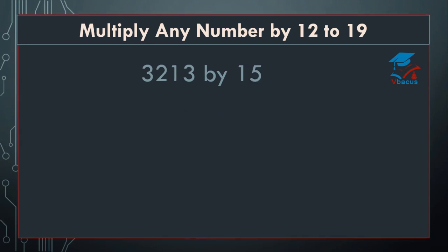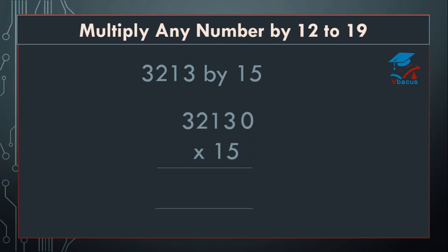Let us go to the next sum: multiply 3213 by 15. Here you have to multiply by 5 and insert a 0 on the right hand side and a 0 on the left hand side. So, 5 threes are 15 plus 0 equals 15. Write 5, cut the 0. 5 ones are 5 plus 3 equals 8. Cut 3. 5 twos are 10 plus 1 equals 11. Write 1, 1 will be carried over. Cut 1.